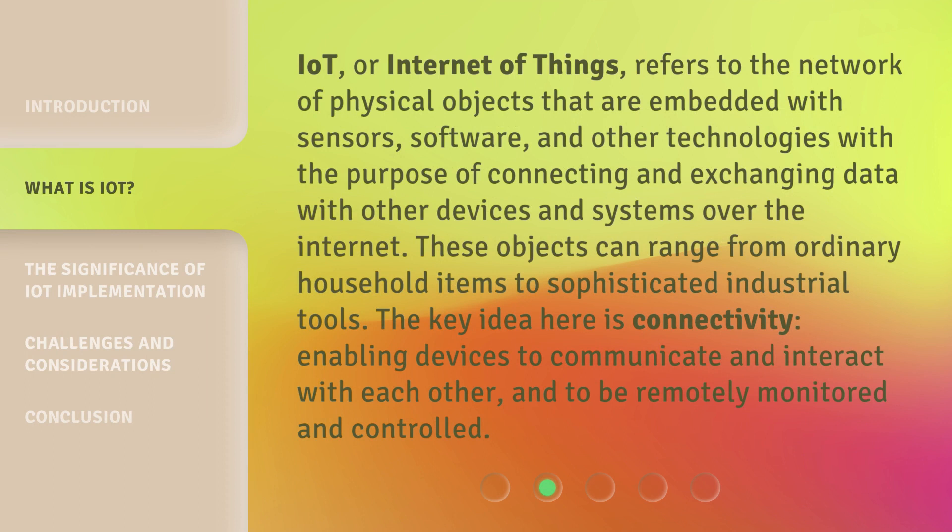IoT, or Internet of Things, refers to the network of physical objects that are embedded with sensors, software, and other technologies with the purpose of connecting and exchanging data with other devices and systems over the Internet. These objects can range from ordinary household items to sophisticated industrial tools. The key idea here is connectivity, enabling devices to communicate and interact with each other, and to be remotely monitored and controlled.